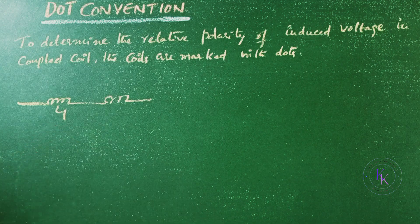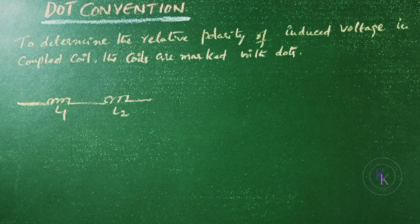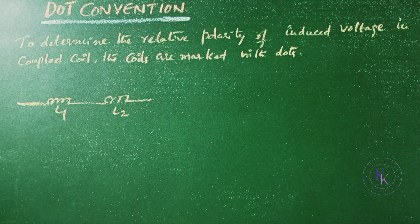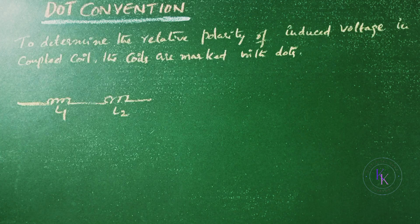There are series connected coupled coils L1 and L2. On each coil a dot is placed at the terminal which are instantaneously of the same polarity on the basis of mutual inductance alone.